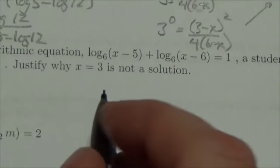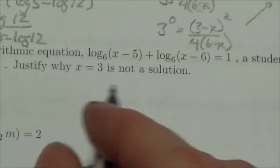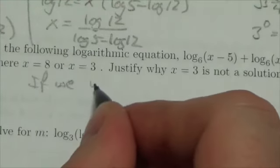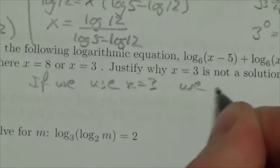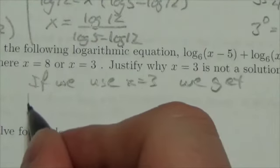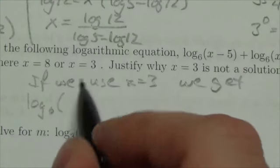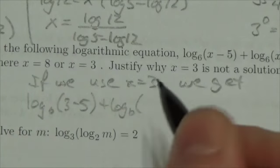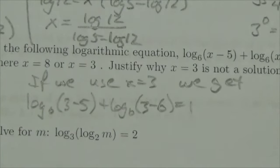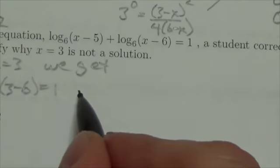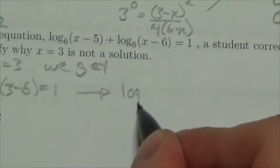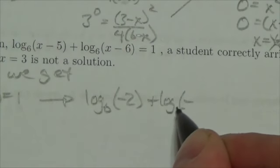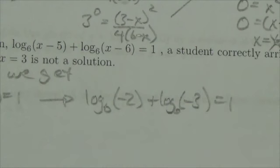If we plug in x equals 3, we get log base 6 of (3 minus 5) plus log base 6 of (3 minus 6) equals 1. When we evaluate that, this becomes log base 6 of negative 2 plus log base 6 of negative 3 equals 1.